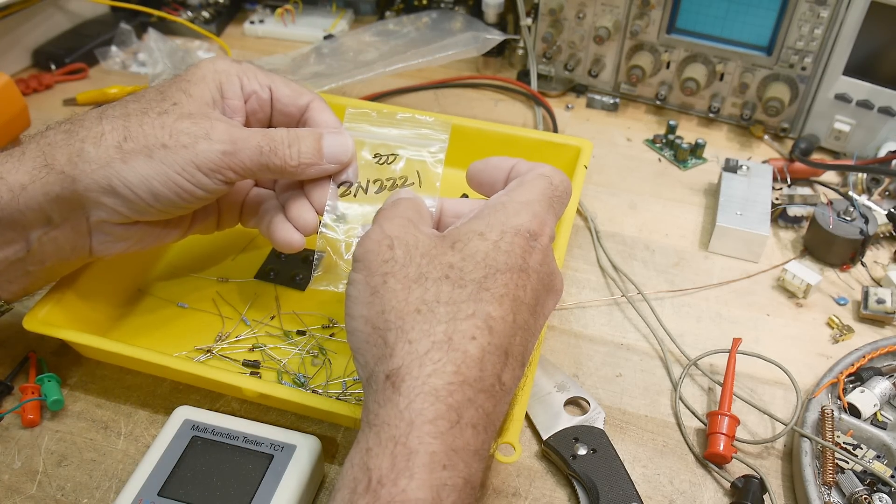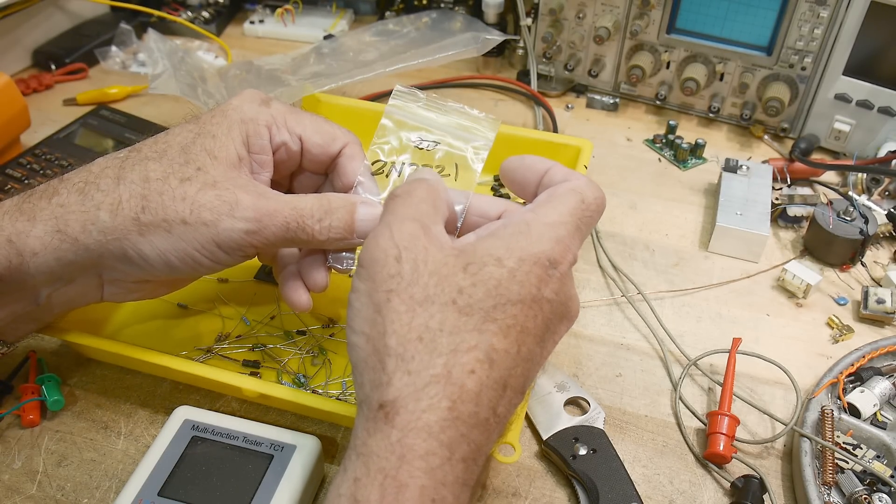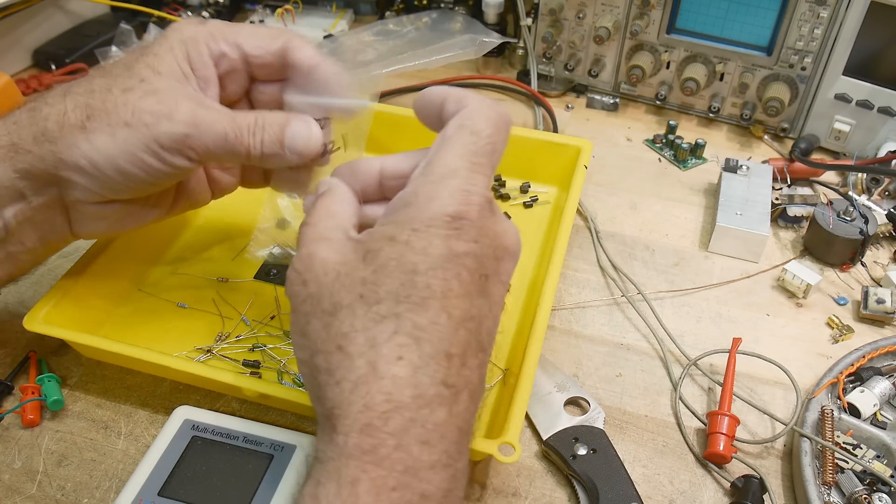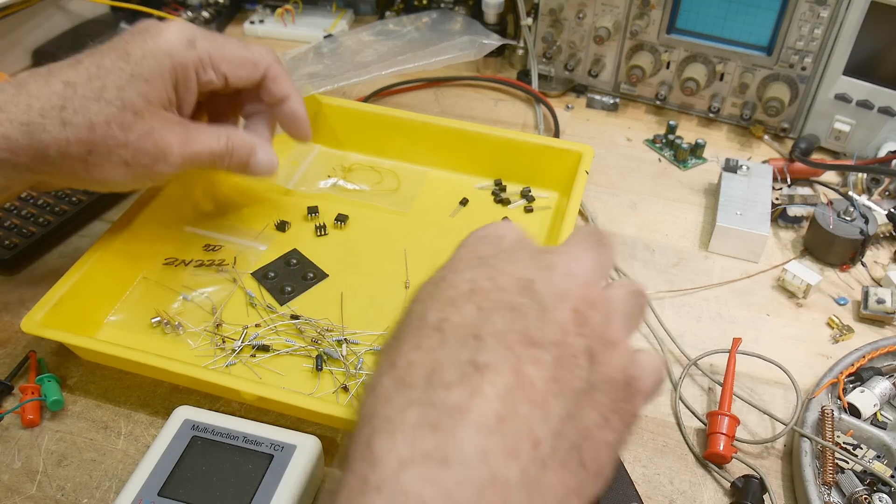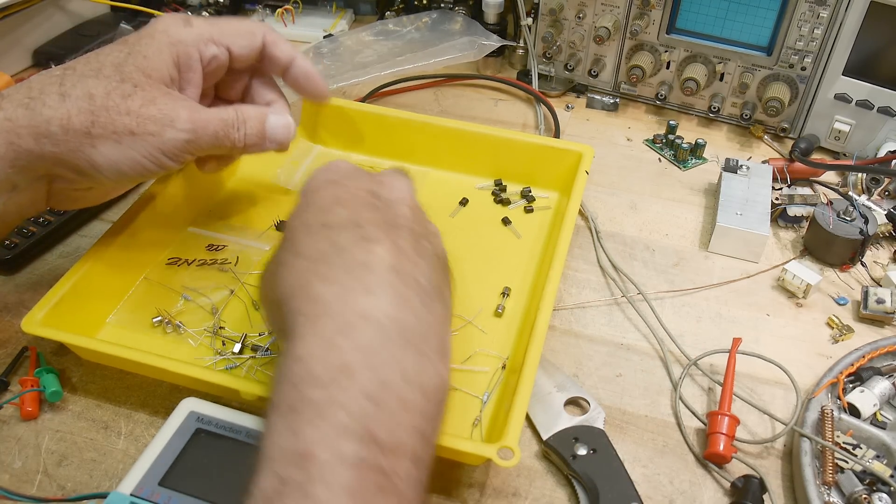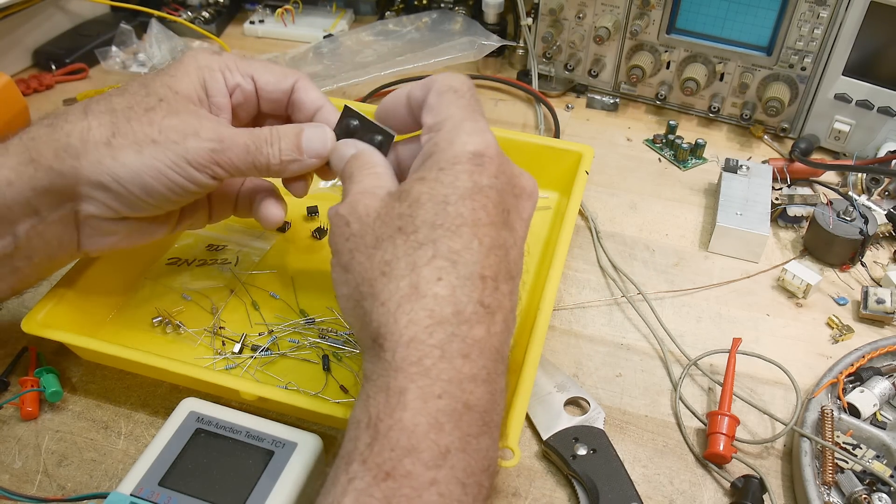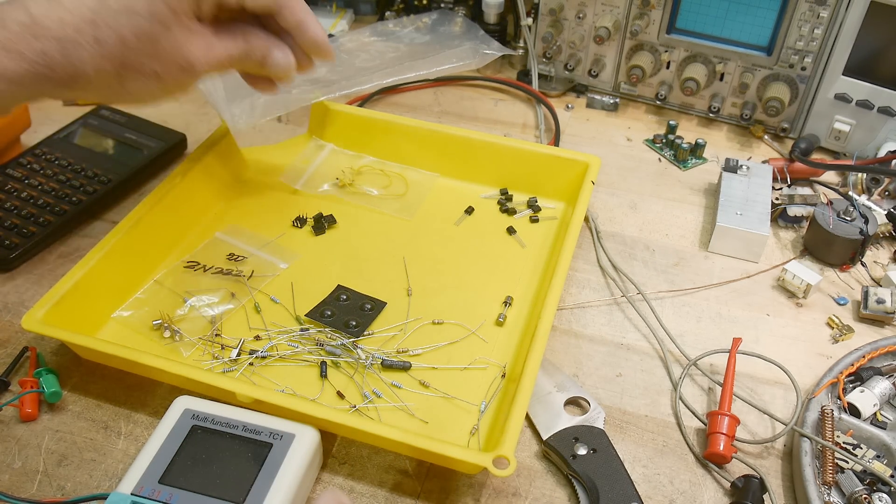Looks like there's some 2N2221s. It'd be interesting to see what the differences between a 2221 and a 2222 is, so maybe I'll do a video on that. There's just some resistors and stuff. Some stick-on feet, as long as the stick-on's still good. They go bad after a while. There's some optocouplers. I might do a video of the day on those.